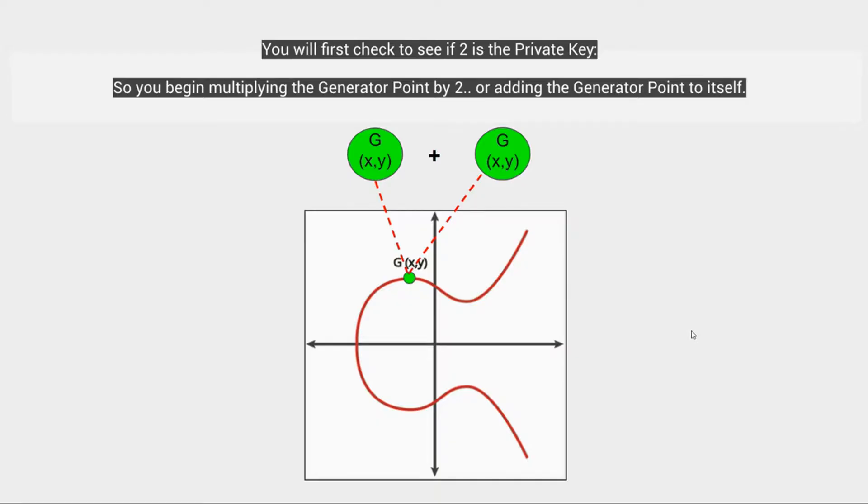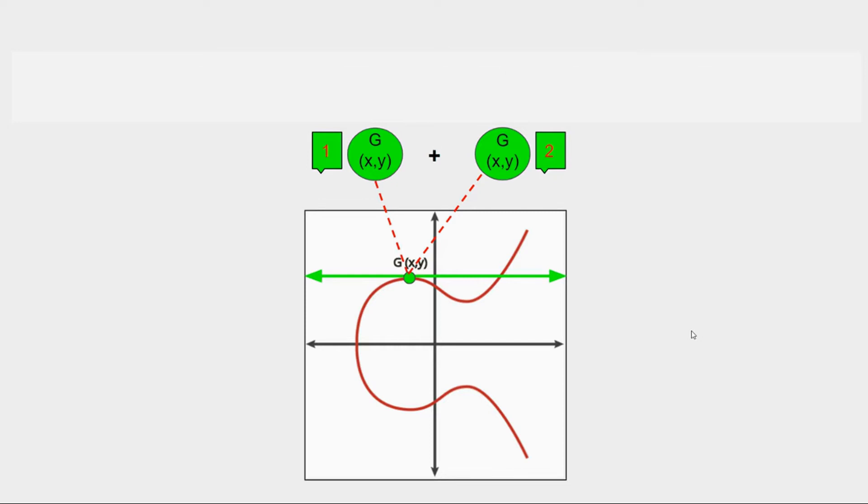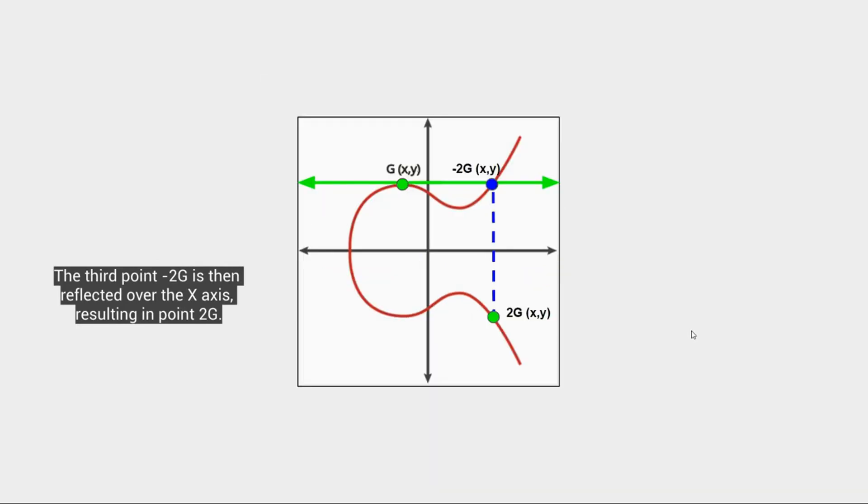Just like the previous multiplication example, we begin with the generator point by adding it to itself. Again, this is actually two points resulting in the tangent line with the curve. Now that's one point, that's two points. There's obviously a third point, which is denoted as negative 2g. From there, just like in the previous example, we reflected over the x-axis, giving us a point of 2g.